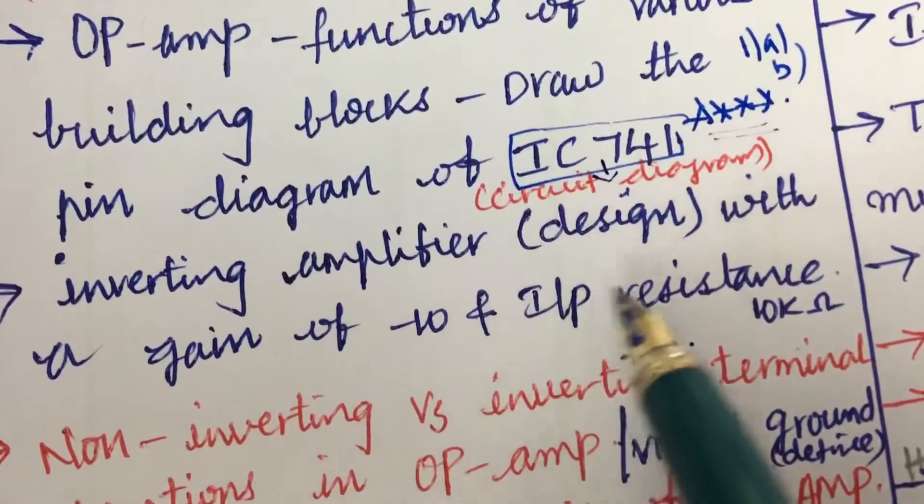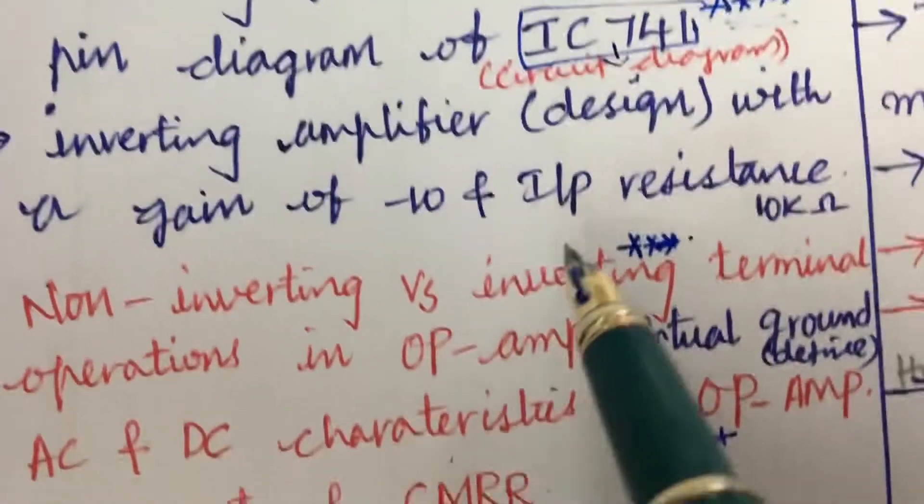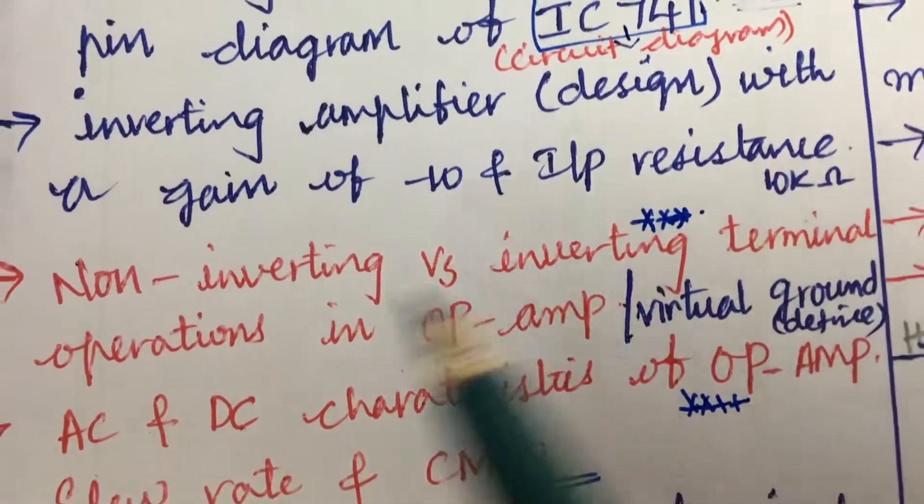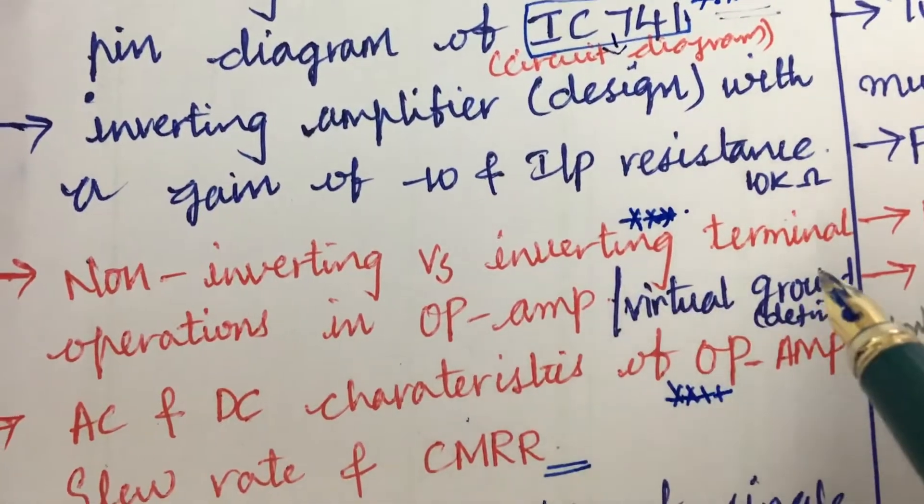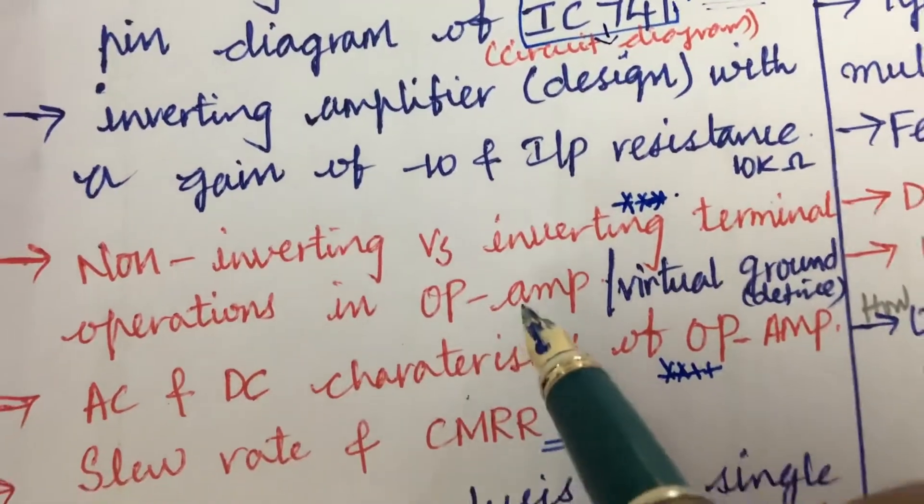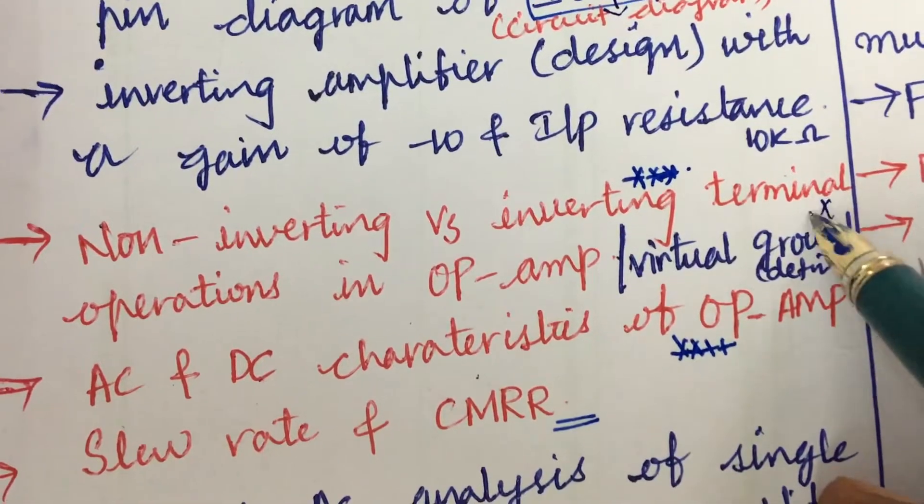And the circuit diagram related to it and inverting amplifier design with a gain of minus 10 and input resistance of 10 kilo ohms. And non-inverting versus inverting terminal and the operation in OP AMP and the virtual ground define this term.